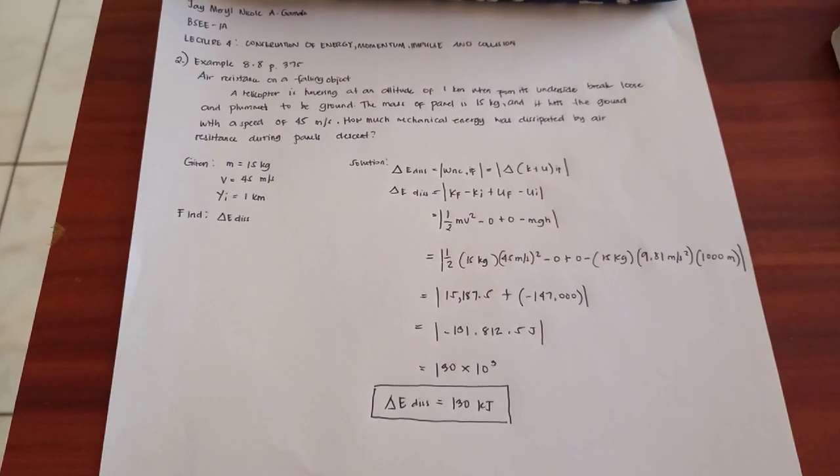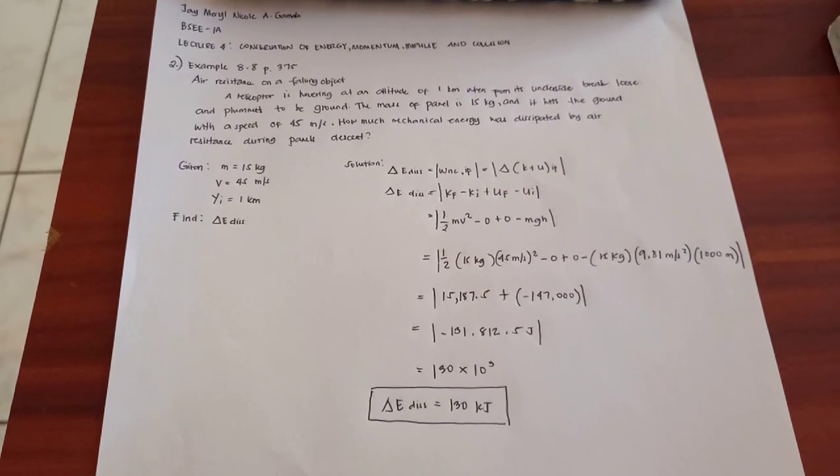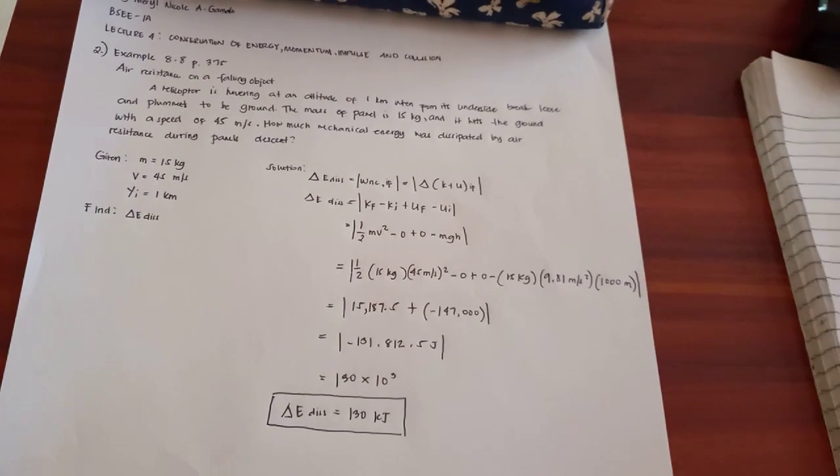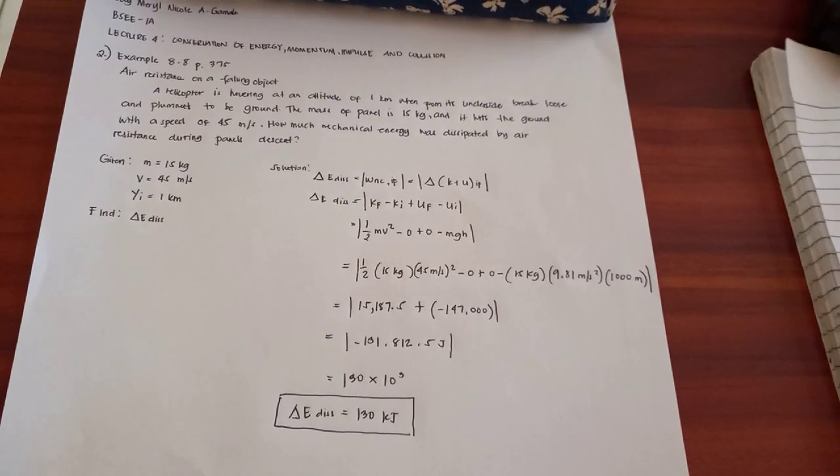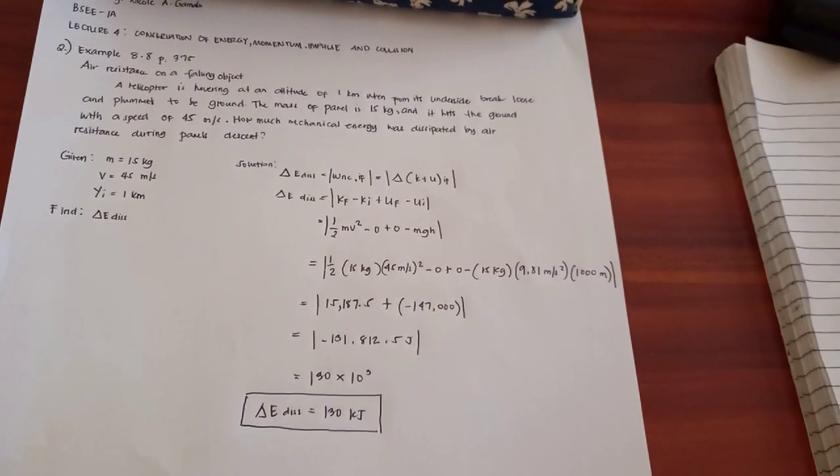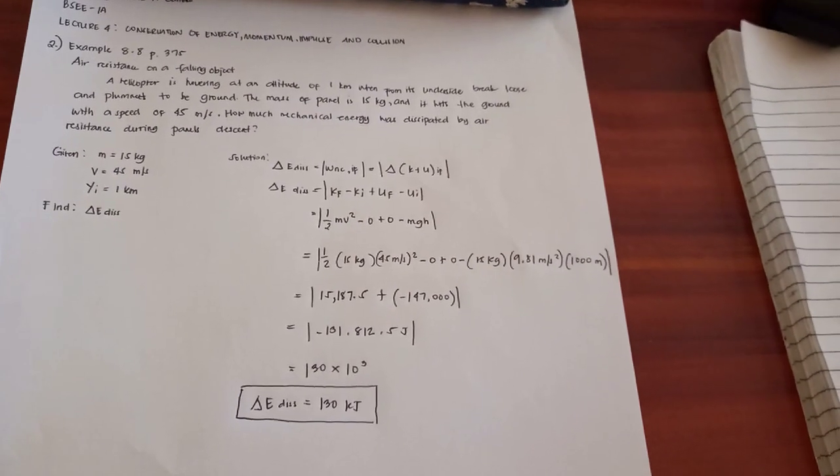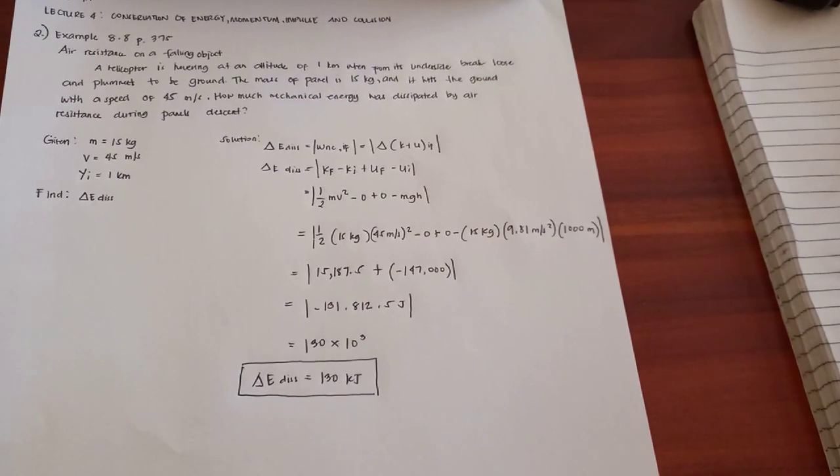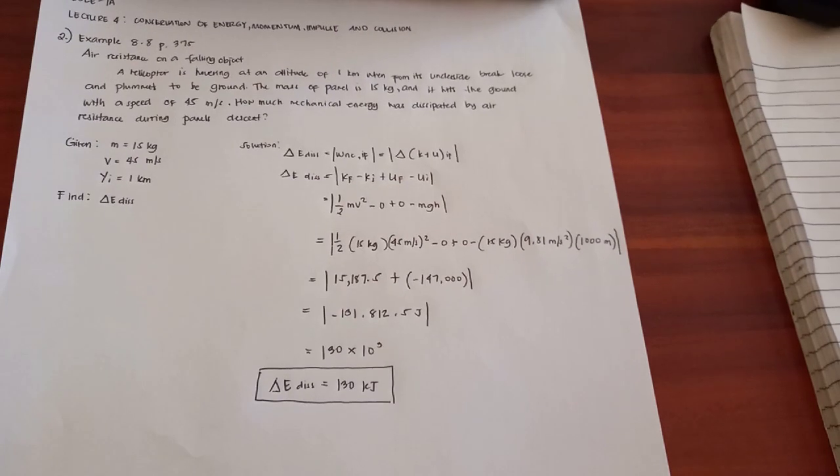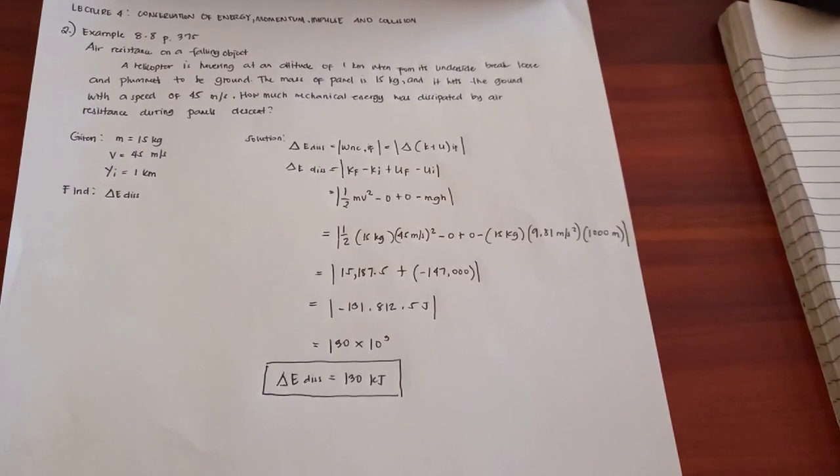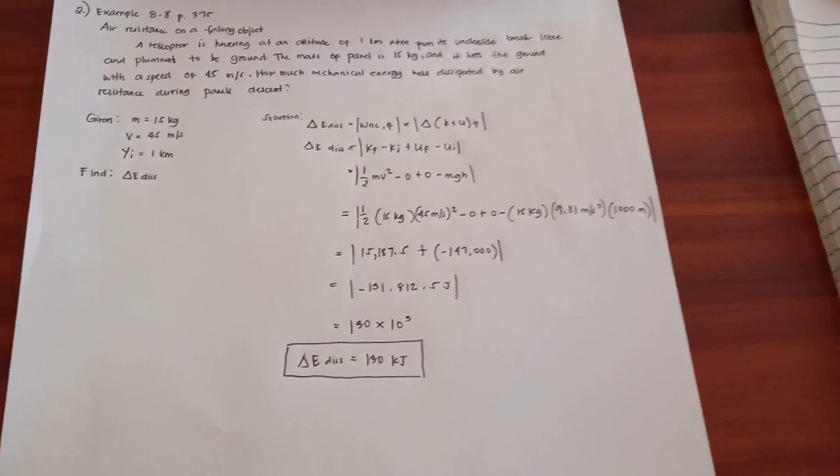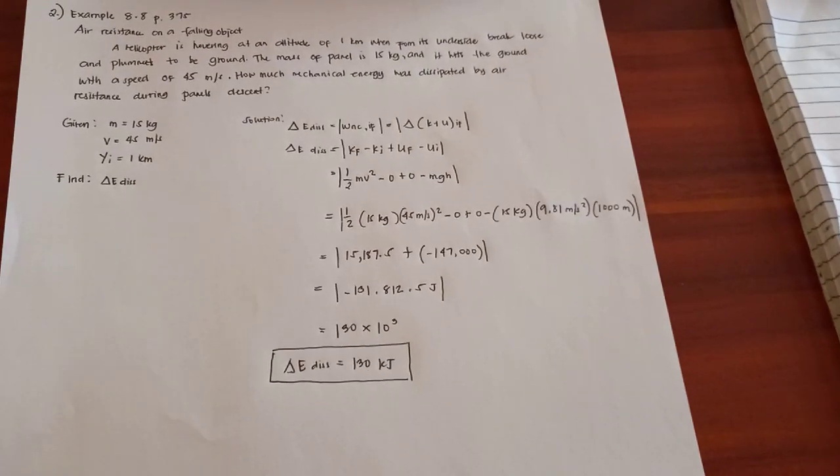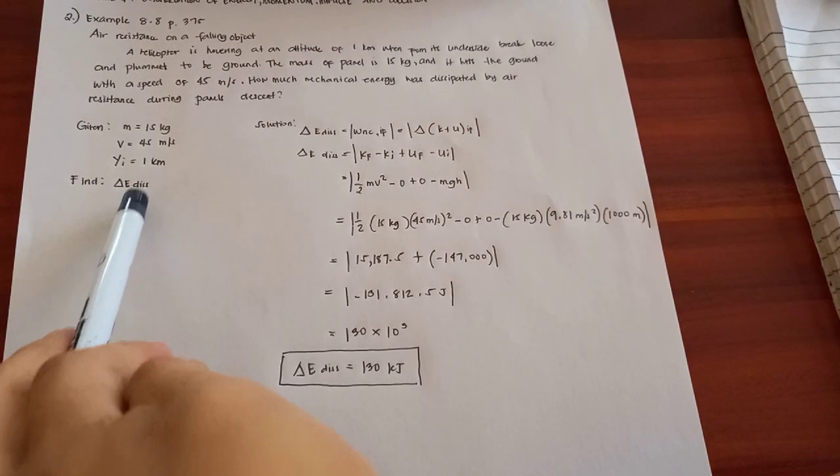Problem set number 2 in example 8.8 on page 375. Air resistance on the following object: A helicopter is hovering at an altitude of 1 km when from its underside breaks loose a panel and plummets to the ground. The mass of panel is 15 kg and it hits the ground with a speed of 45 meters per second. So the given: